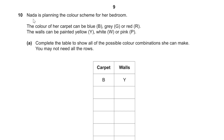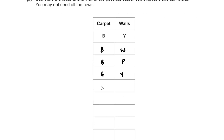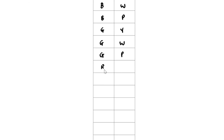Question 10. Nada's carpet can be blue, grey, or red; walls can be yellow, white, or pink. The 9 possible combinations are: blue/yellow, blue/white, blue/pink, grey/yellow, grey/white, grey/pink, red/yellow, red/white, red/pink.